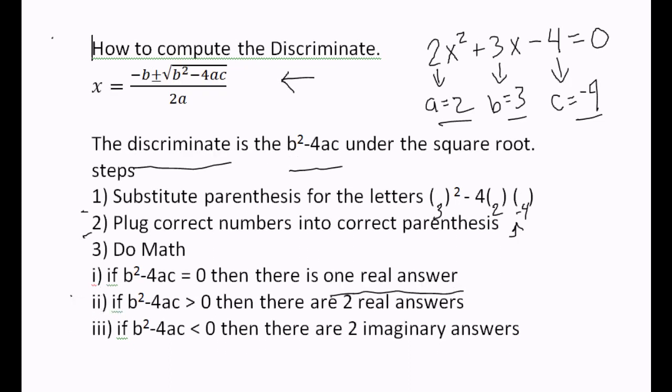Let me write this a little bit neater. If it's positive, then there are two real answers. If b squared minus 4ac is less than 0, numbers that are less than 0 are negative. So if b squared minus 4ac is less than 0, then there are two imaginary answers.